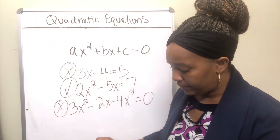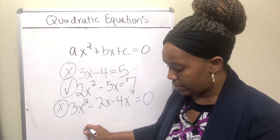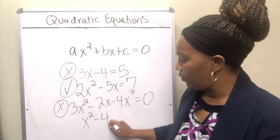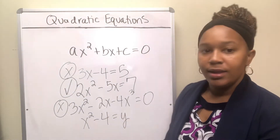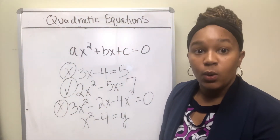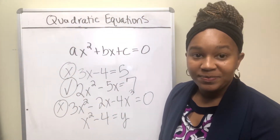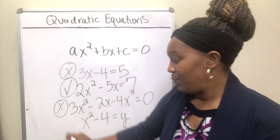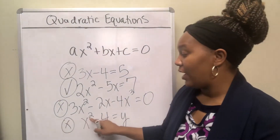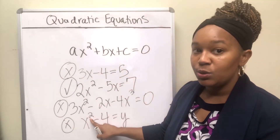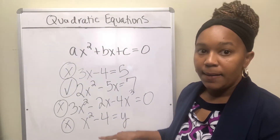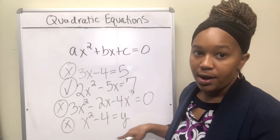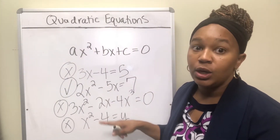Next example: x squared minus 4 equal to y. Is that a quadratic equation? Your answer should be no. The highest exponent is two and there is an equal sign, but now there are two variables — you have x and y — so it's not a quadratic equation.